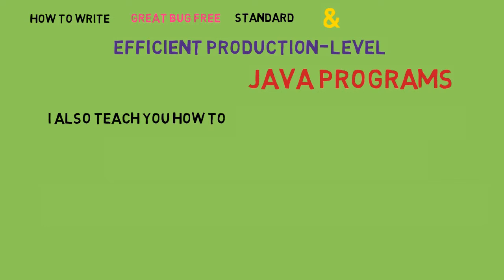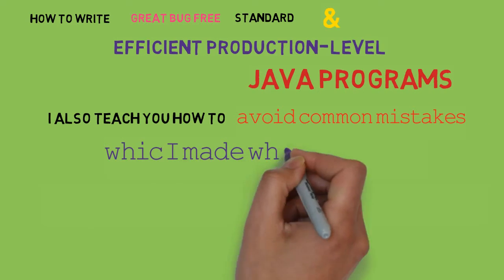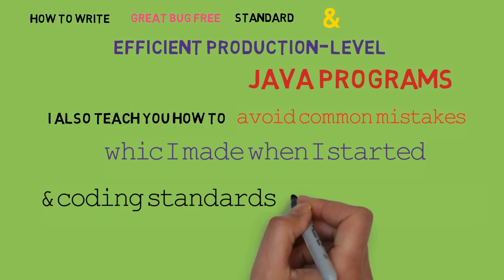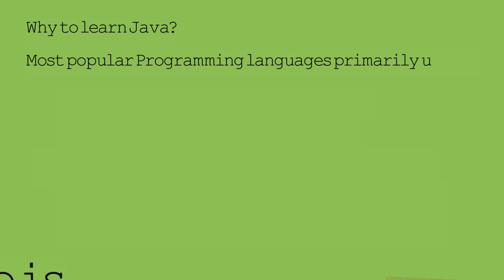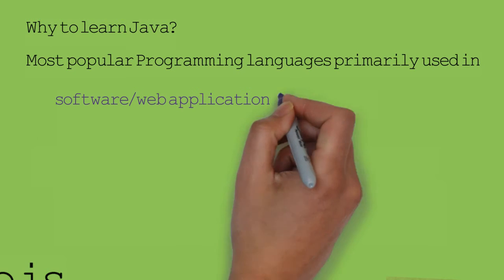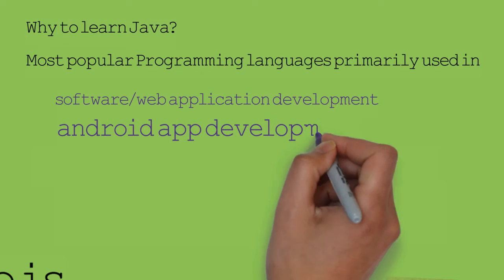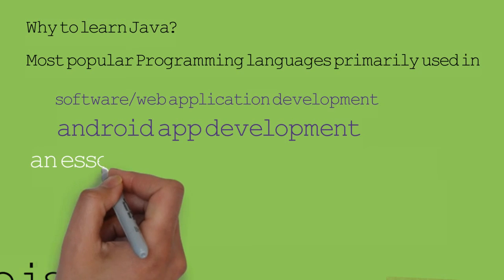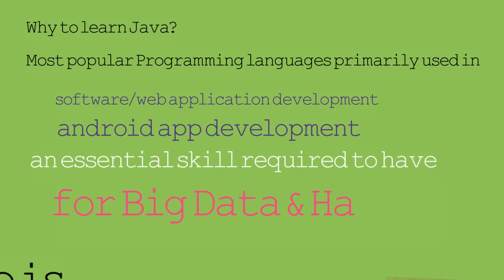I also teach you how to avoid common mistakes which I made when I started, and the coding standards I followed later on. Java is the most popular programming language, primarily used in software and web application development, Android app development, and it is an essential skill for big data and Hadoop.